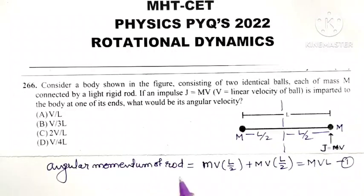But we know angular momentum is also equal to I into omega. Angular momentum is also equal to I times omega.